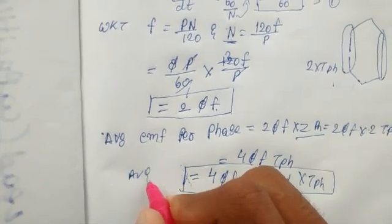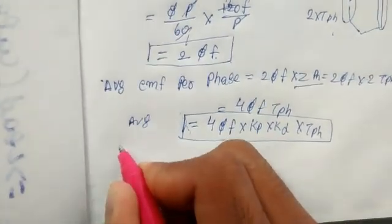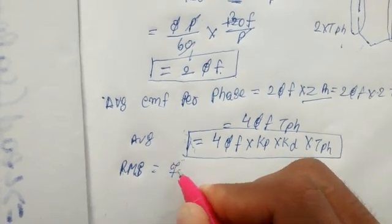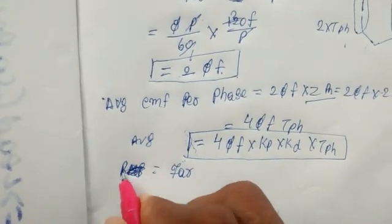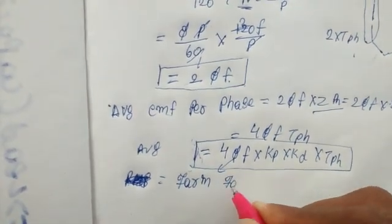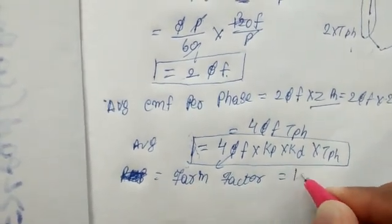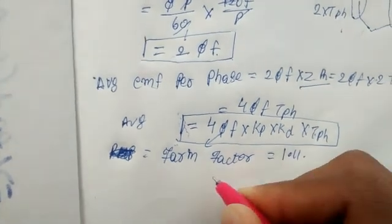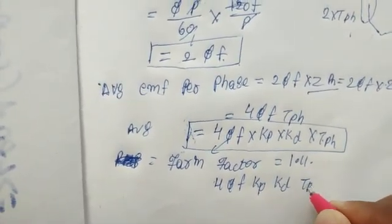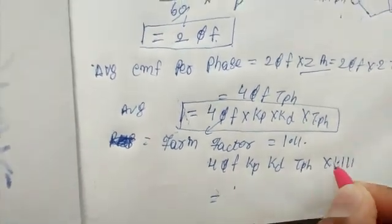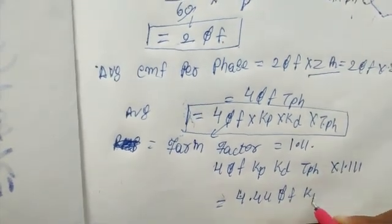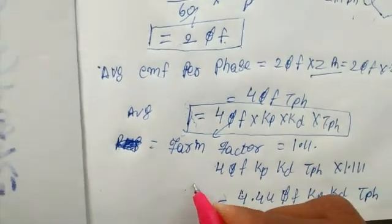Next, this is the average value. We call it the RMS value: RMS value is nothing but the form factor multiplied by the average value. The form factor for a sinusoidal waveform is 1.11. So the equation becomes 4fΦKpKdTph into 1.11, which gives the final EMF equation: E equals 4.44 Φ f Kp Kd Tph. This is the EMF equation of a synchronous machine.